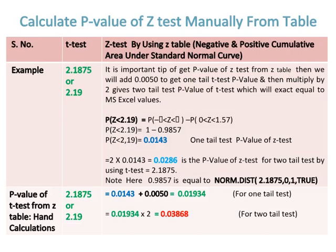It is an important tip to get p-value of z-test from z-table, then we will add 0.0050 to get one tail t-test p-value, and then multiply by 2 gives two tail test p-value of t-test, which will be exactly equal to MS Excel values. Because in exams you are not allowed to use MS Excel software or p-value calculator to find it.